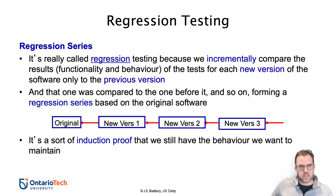Typically we use the three types of tests we talked about last class: the original functionality test suite used during development, the failure tests if any, as well as the first operational test. These three types of tests form the initial test suite that we will use for regression testing.